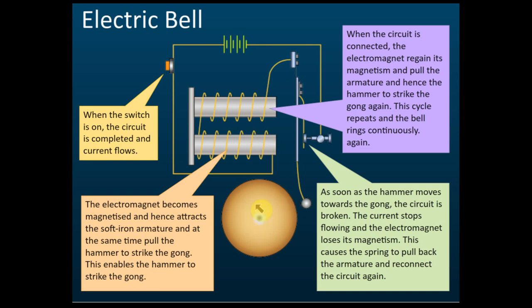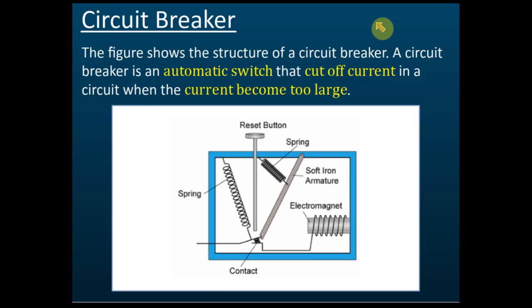That is how the electric bell works. Now for the circuit breaker — a circuit breaker is an automatic switch that cuts off the current if the current becomes too high. For example, in your house, sometimes the main switch jumps and disconnects the circuit — that is a circuit breaker. It functions to disconnect the circuit when current becomes too high.